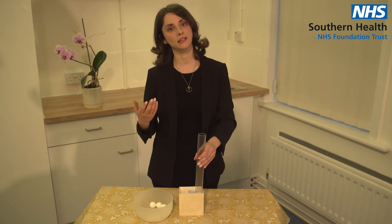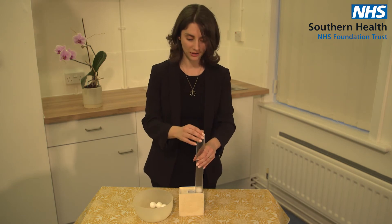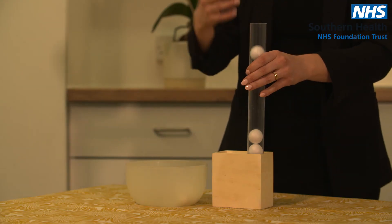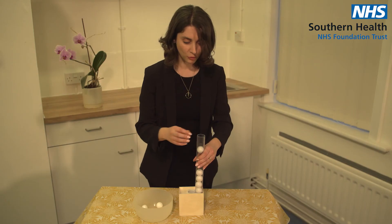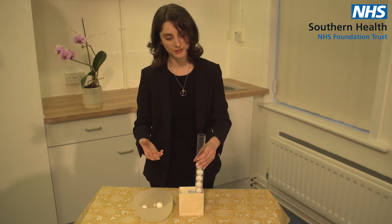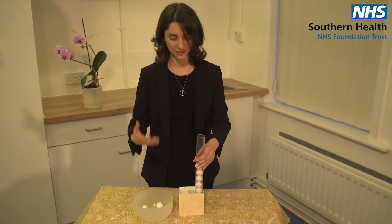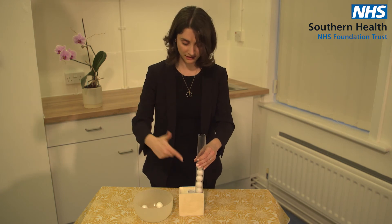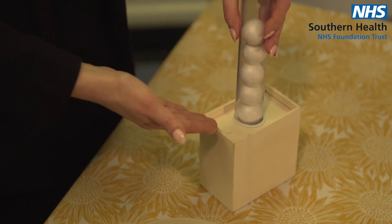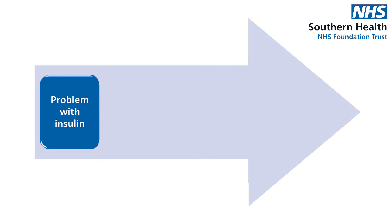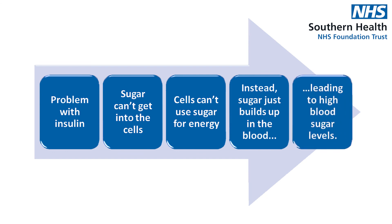When we're living with type 2 diabetes, that process is not happening in quite the same way. We'll eat our meal containing carbohydrates and it will be broken down and released into our blood as individual molecules of glucose. At this point, the pancreas still might sense the high blood sugar levels, but the insulin it's producing is not working properly, or it's not able to produce enough insulin. So we haven't got these keys to open the door to the cell, and the sugar can't get in to be used as energy. Instead, it builds up in the blood, giving us high blood sugar levels.